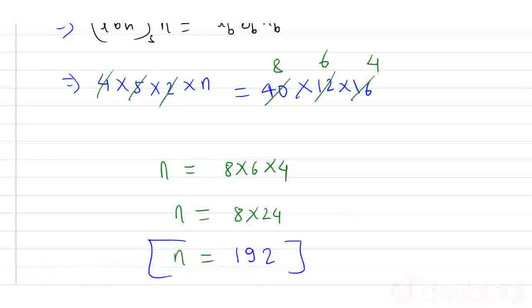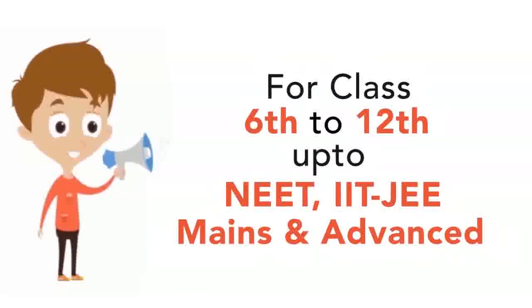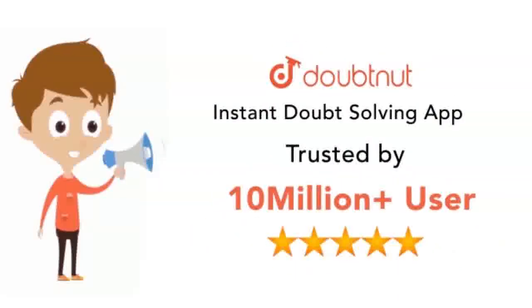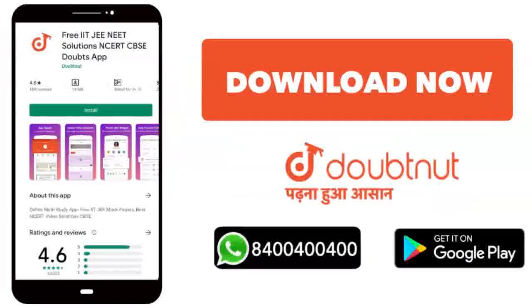I hope you understand. Thank you for watching. Classes 6 to 12, NEET, IIT means. 10 million students are now. Today, download Doubtnut or WhatsApp.